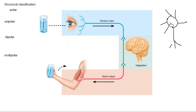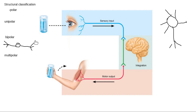When I talk about a bipolar neuron, two extensions come off of it. A bipolar neuron has the cell body in the middle, with one extension that has dendrites collecting information and one extension that has an axon sending that information away.